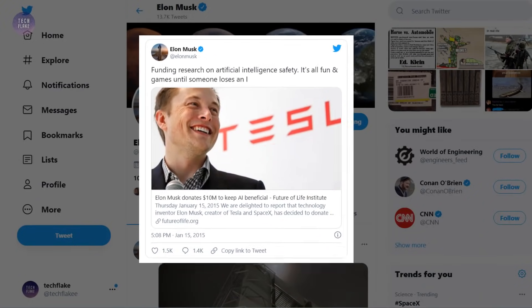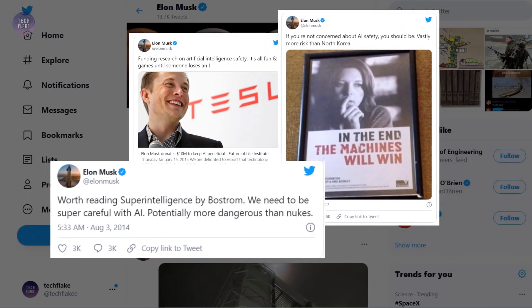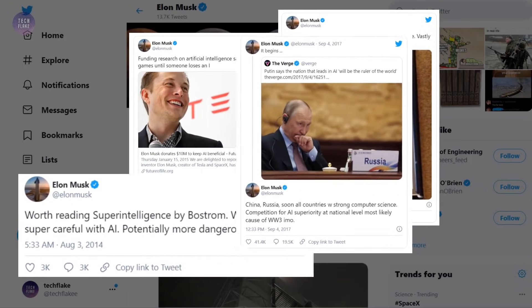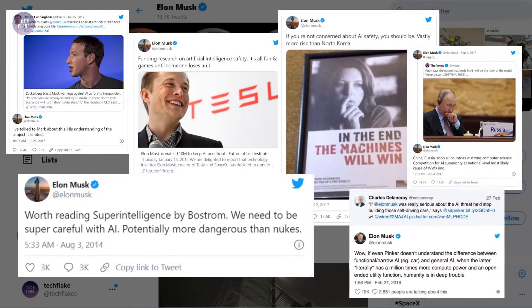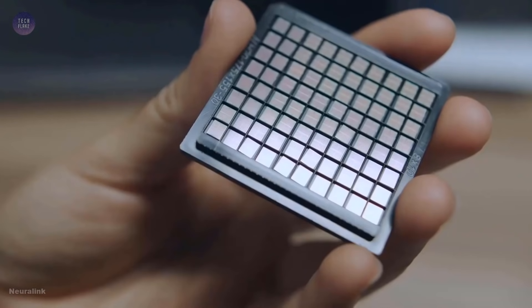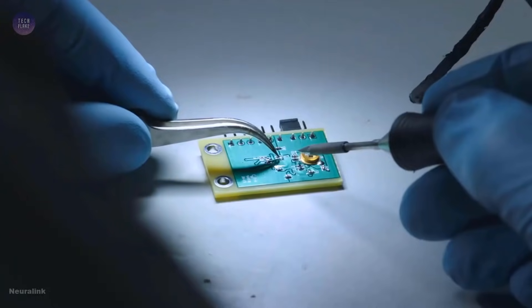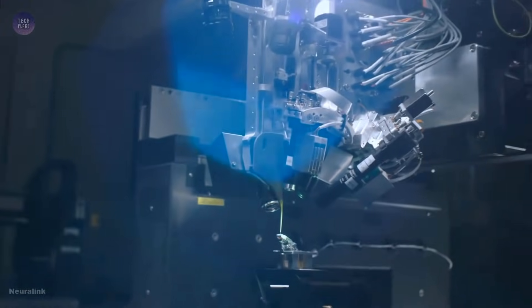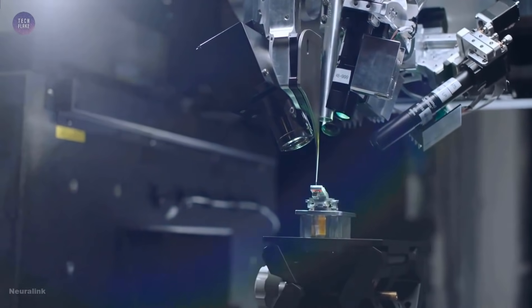He claims that existential threat posed by artificial intelligence is much closer than previously predicted. Musk has consistently warned us of the existential threat posed by advanced artificial intelligence solutions in recent years. Despite this, he still feels that the issue is not properly understood. Before we dig deeper into what solutions Musk has to offer, let's talk about why he considers AI dangerous.